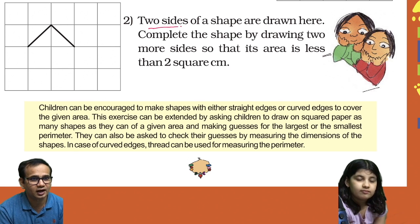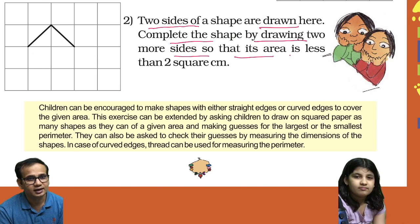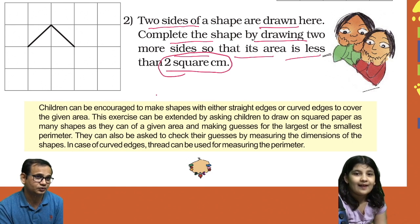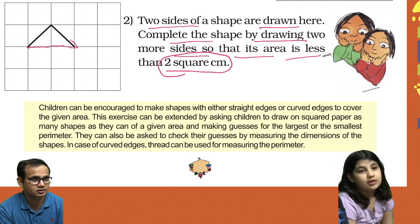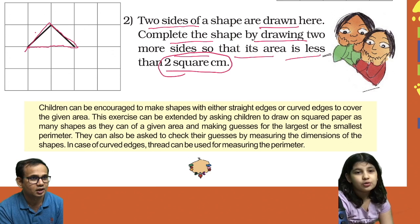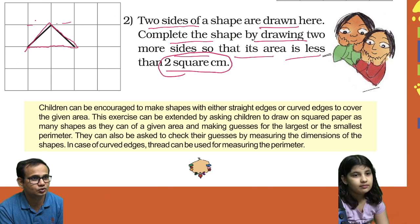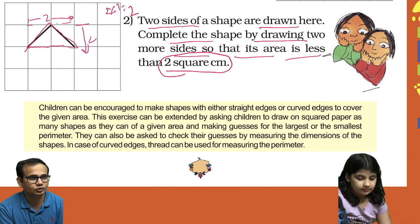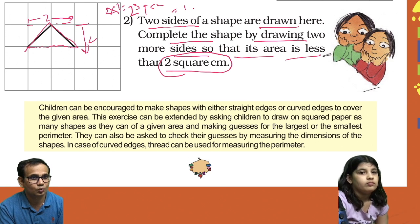Second question: Two sides of a shape are drawn here. Complete the shape by drawing two more sides so that its area is less than 2 square centimeters. First we will find out the area of this position — it is 2 here and this is 1, so 2 into 1 equals 2. That means 2 square centimeters is the area of this rectangle, and half of 2 is 1, so 1 square centimeter is the area of this triangle.